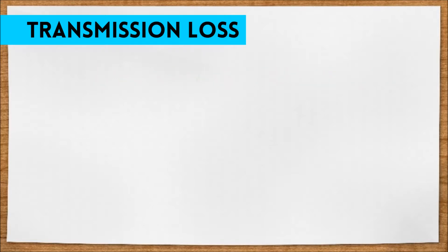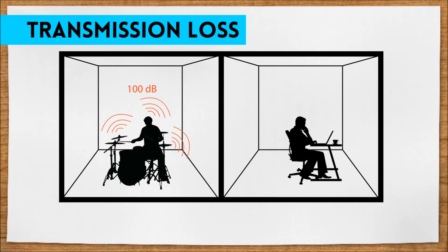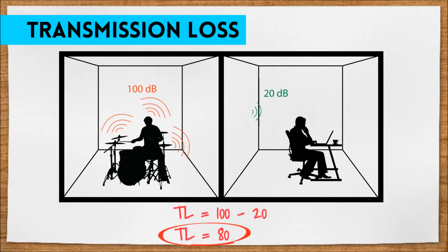For example, let's say room A is producing the same 100 decibels, but now room B is only at 20 decibels. That would mean the TL number is 80 — the wall assembly did a much better job. Get the idea?